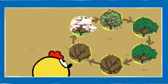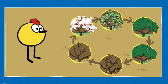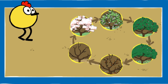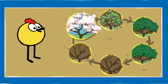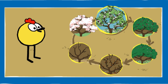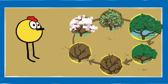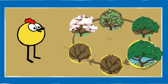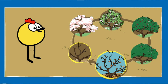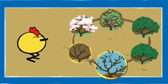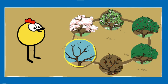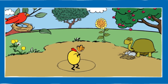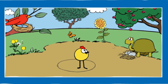Nice job! All the pictures are in the right order. This is how a cherry tree changes over the year. In the spring, flower buds grow and blossom on tree branches. Leaves grow on the branches and the flower petals fall off. Hard green cherries grow where the blossoms were on the branches and, in the summer, turn red. When the cherries are ripe, they fall off the tree or get eaten by birds. In the fall, the leaves turn brown and fall off the tree. Finally, in the winter, the branches are bare.